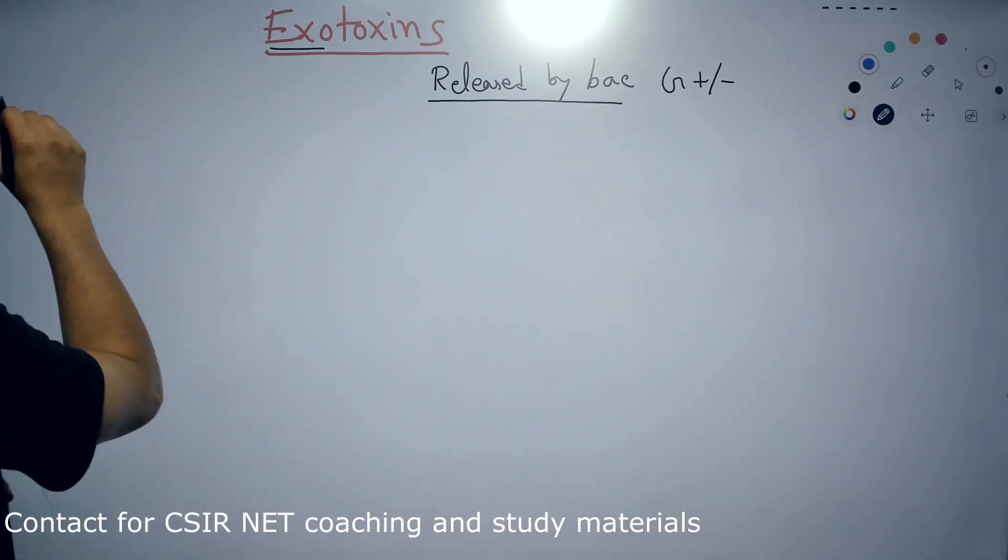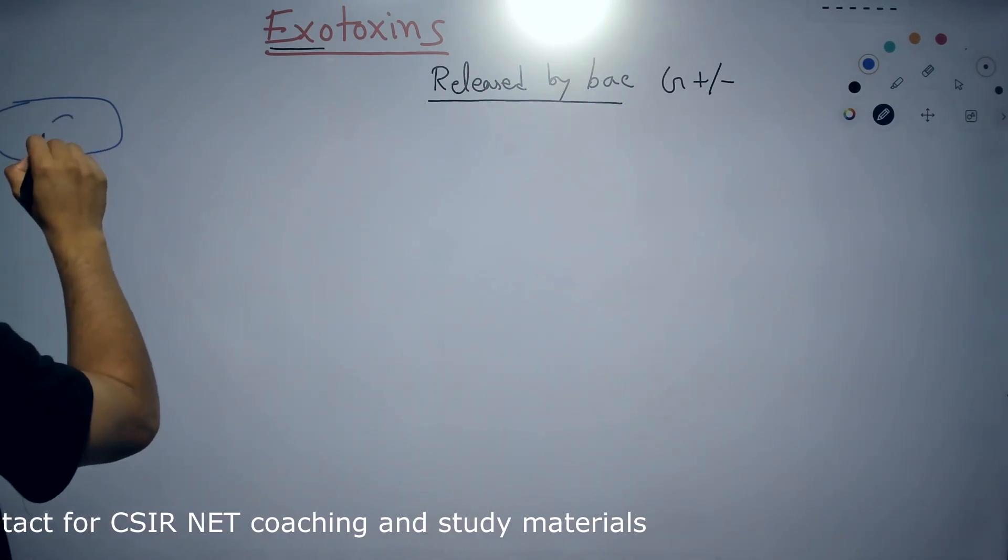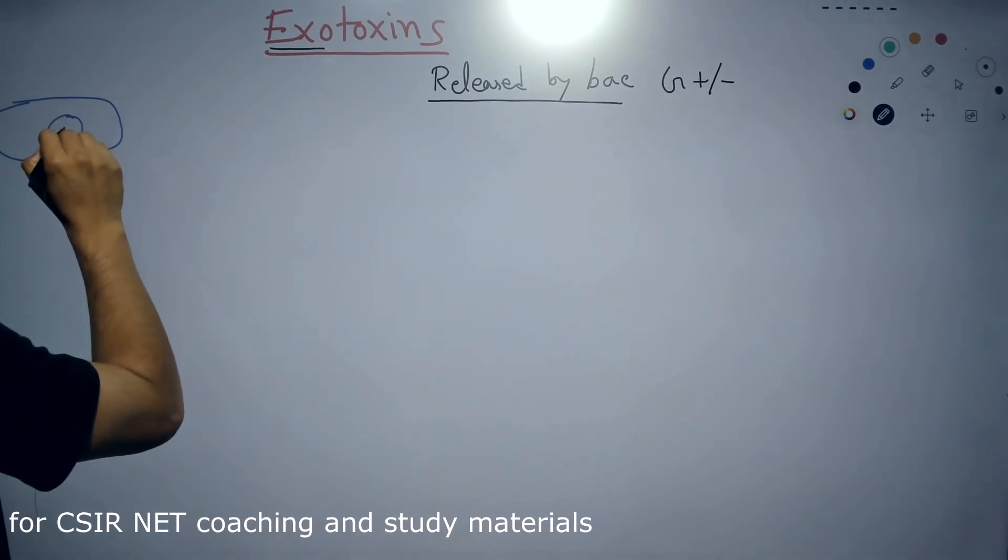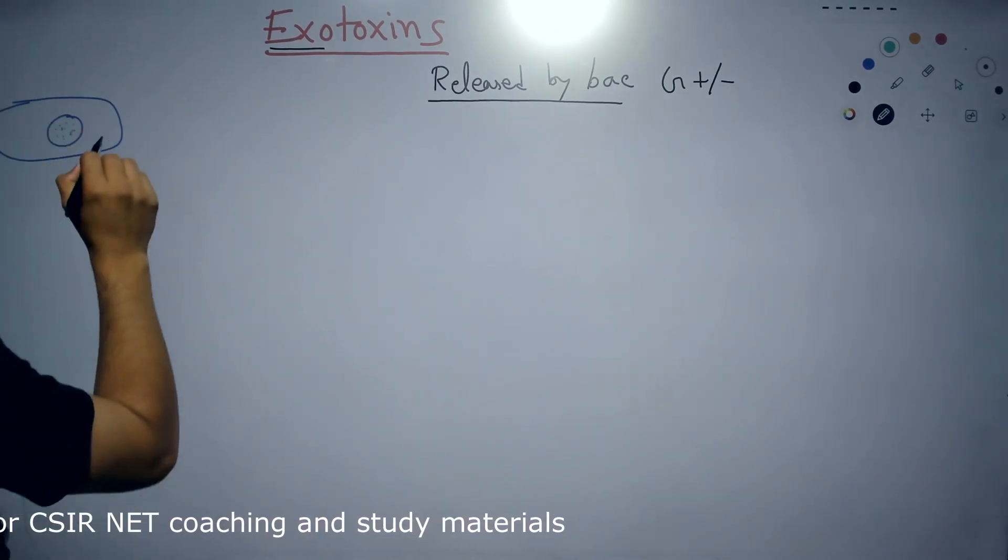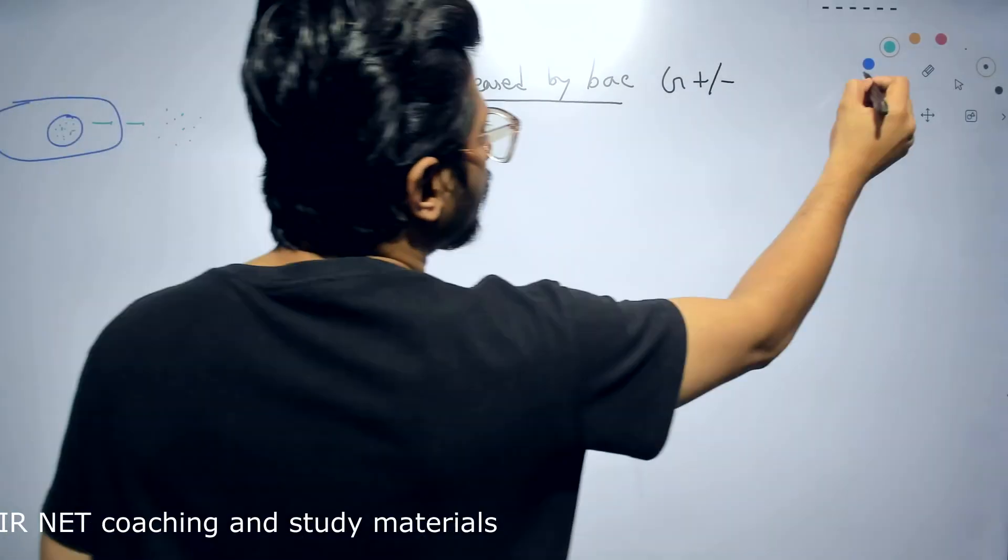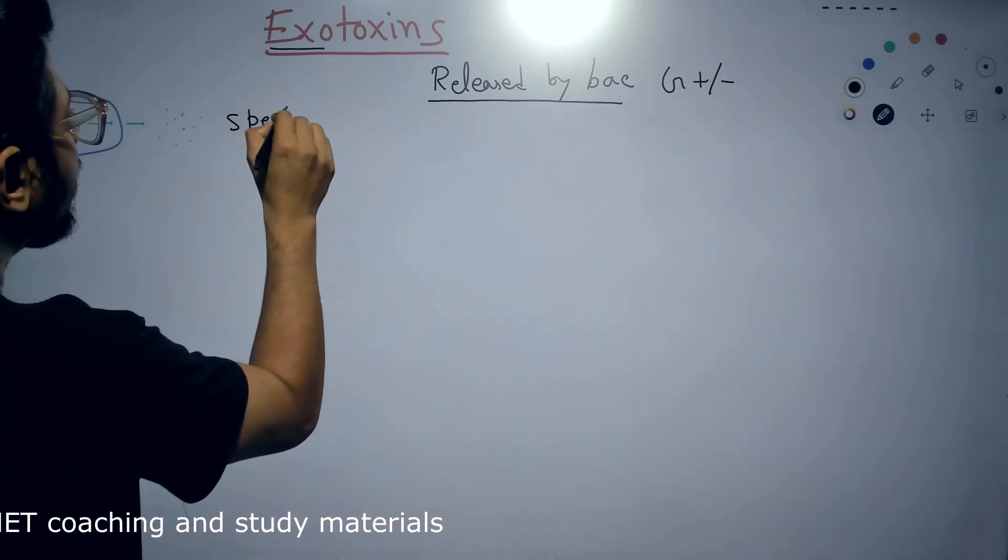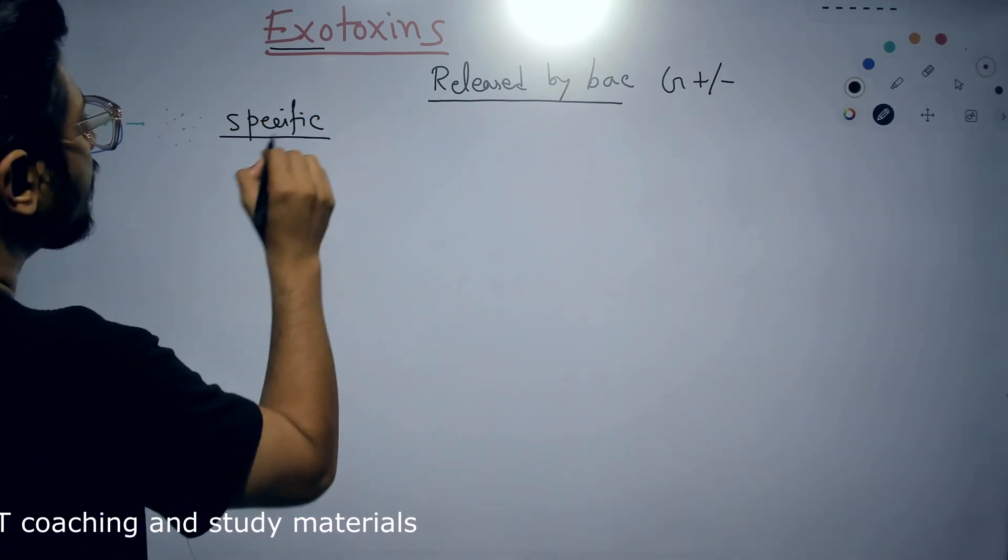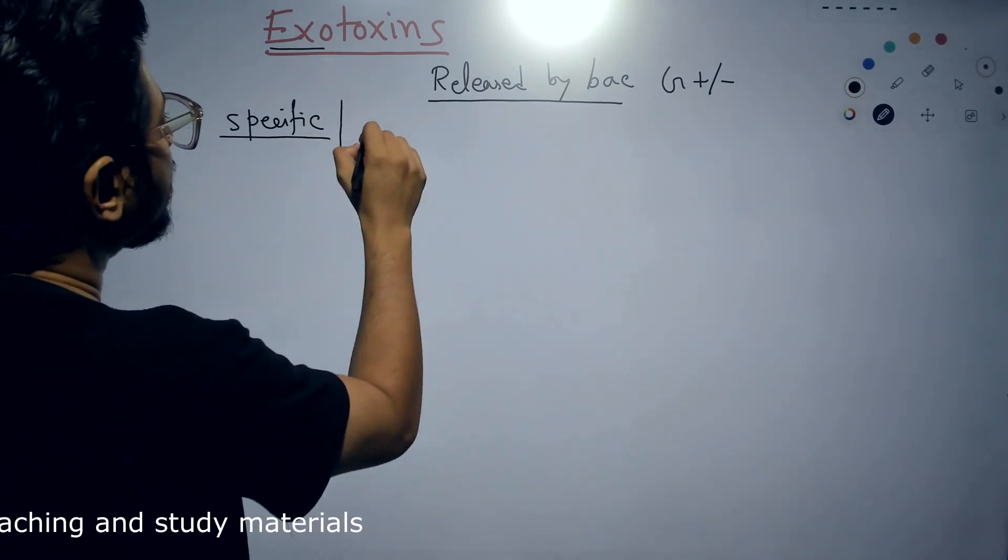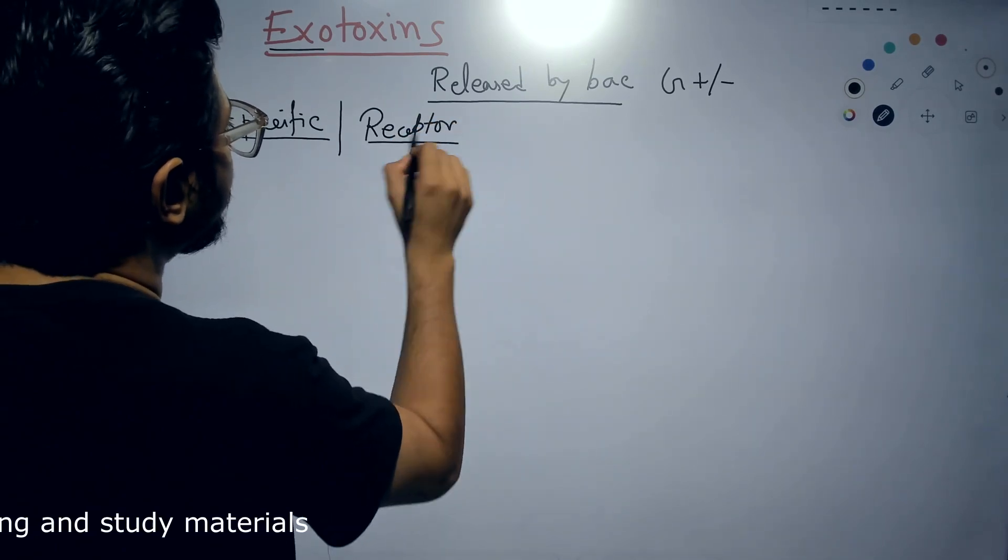In exotoxin, if this is a bacteria that wants to produce the exotoxin, it produces exotoxin inside a sac inside the bacterial cell. And let's say this green color sections are exotoxins. Then upon fusion, this exotoxin can be released out. And once these exotoxins are released, they are very, very specific in terms of their function. Why? Because their interaction to the host receptor is very specific.